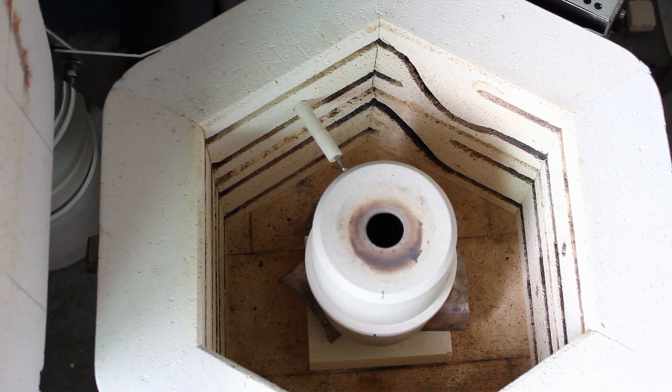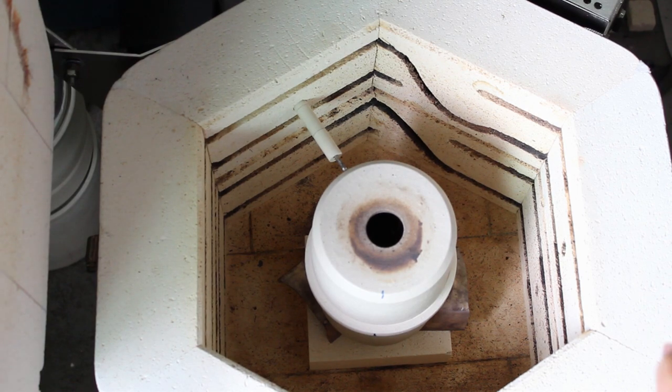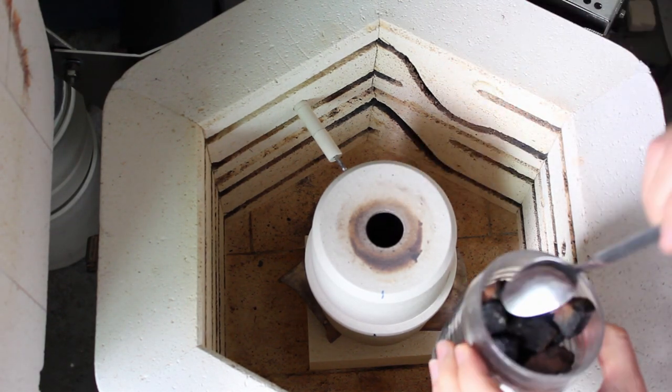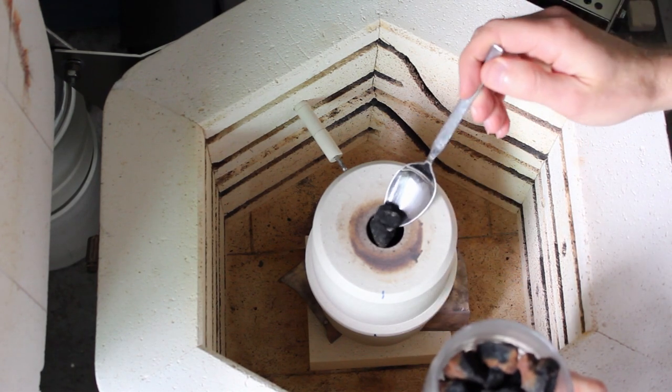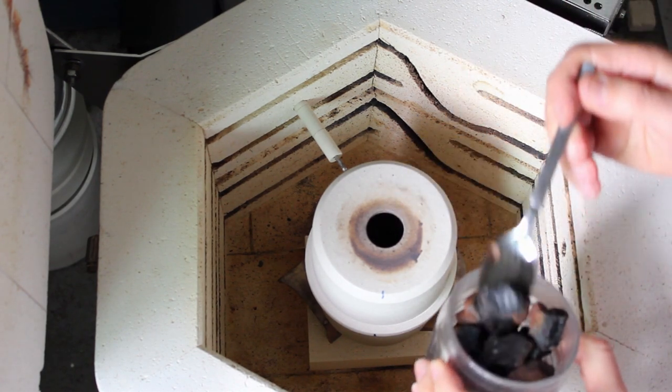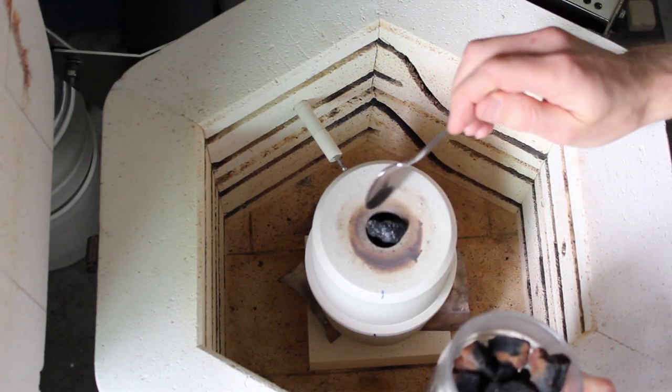Now we need to add coke. Coke is a relatively pure and cheap form of carbon—it will react with excess oxygen in the crucible.